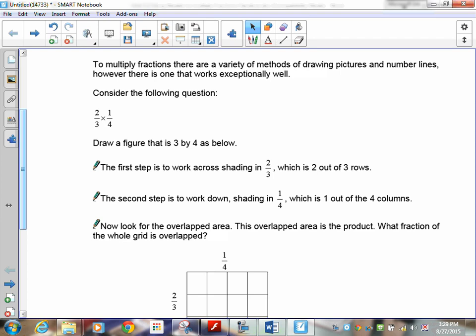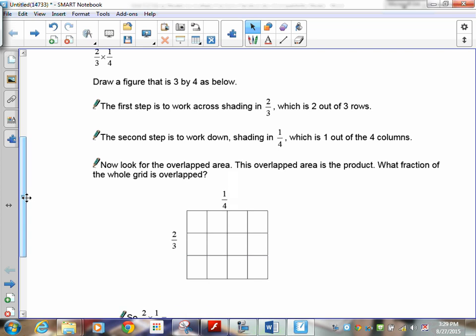This is a step-by-step process. The first step is to work across on two-thirds, so I want two out of three rows. That's the first thing you're going to do: two out of three rows. There are two out of three rows.